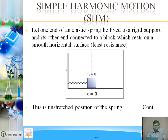Simple harmonic motion, in short SHM. Let one end of an elastic spring be fixed to a rigid support and its other end connected to a block which rests on a smooth horizontal surface. Why a smooth horizontal surface? To make the resistance least, so that the applied force or energy is not utilized to overcome resistance.